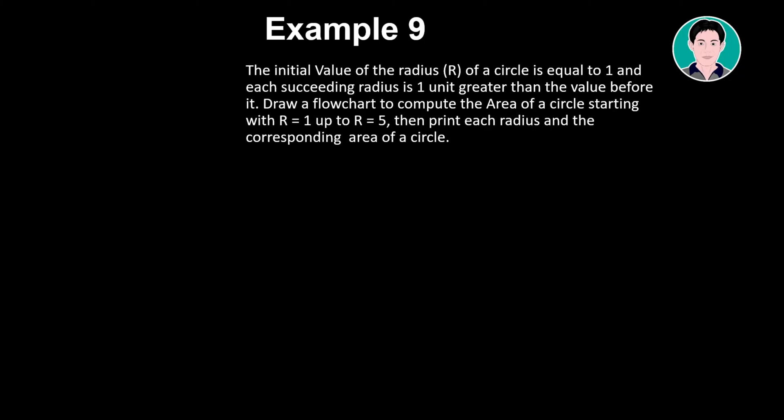Example 9. The initial value of the radius R of a circle is equal to 1 and each succeeding radius is 1 unit greater than the value before it. Draw a flow chart to compute the area of a circle starting with R equals 1 up to R equals 5, then print each radius and the corresponding area of a circle.